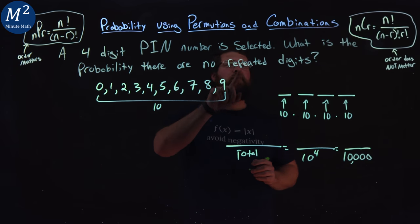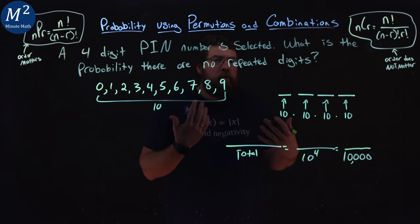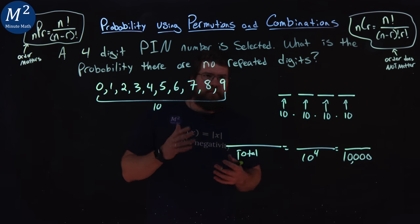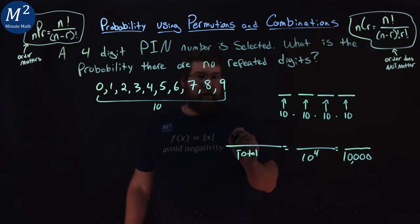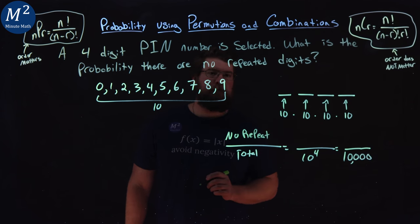Now, we don't want any repeated digits. This is where it gets kind of tricky. We have to figure out what the numerator is. So the numerator is no repeated digits, no repeat.